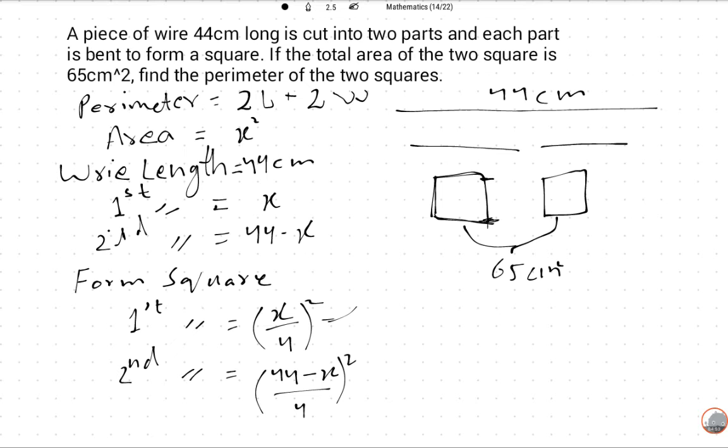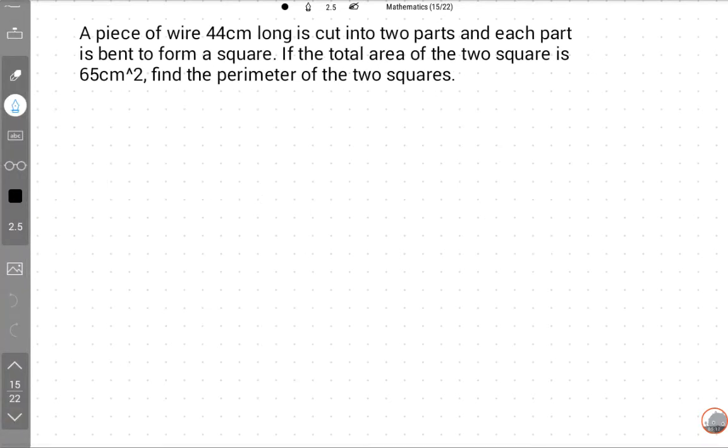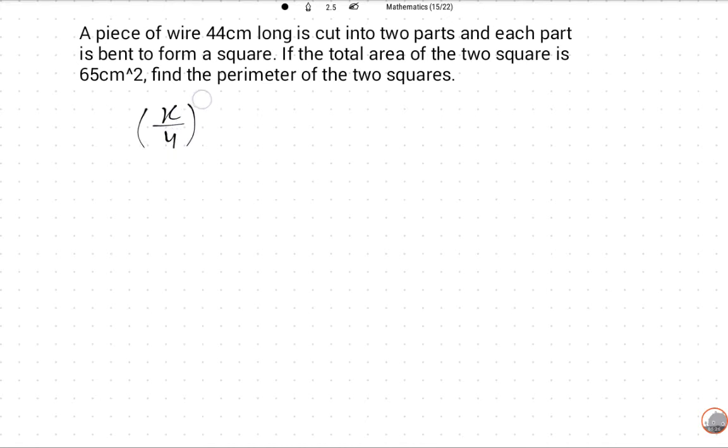So now find the core area of the question. Total area of the two squares is the core part. Area of first square plus area of second square is equal to 65.